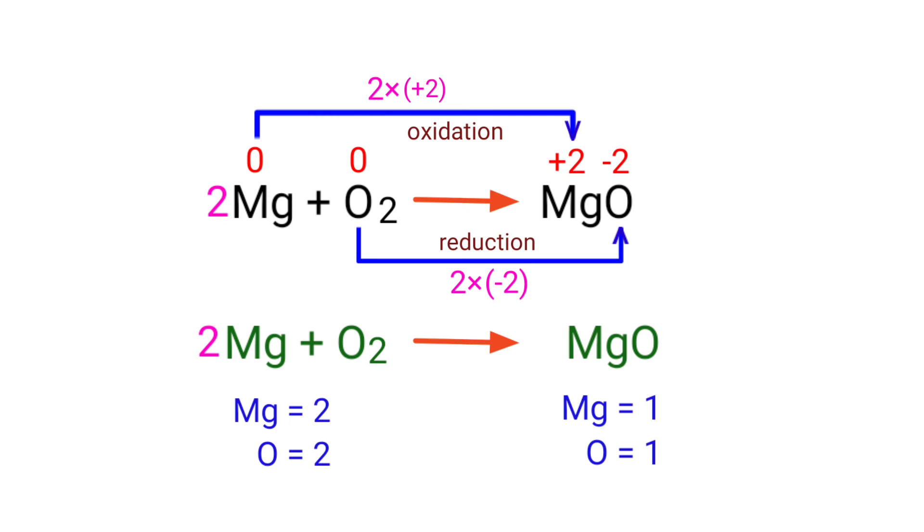In the reactants side, there are 2 magnesium atoms and 2 oxygen atoms present. On the products side, there are 1 magnesium atom and 1 oxygen atom present.